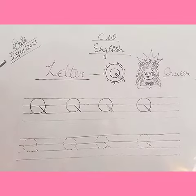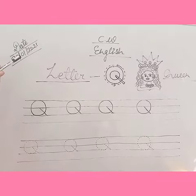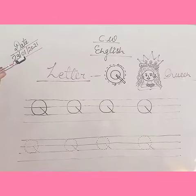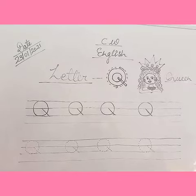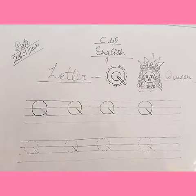So start with the date 23rd, 1, 2021. Then we will write classwork and write the heading letter Q. Q for Queen.